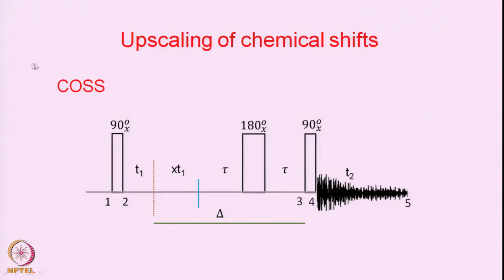Today we are going to discuss the upscaling of chemical shifts. The pulse sequence for this experiment is shown here and it is called COSS — Correlation with Shift Scaling. It is very similar to the previous pulse sequences except that we play around with the delays, the evolution periods of the different Hamiltonians.